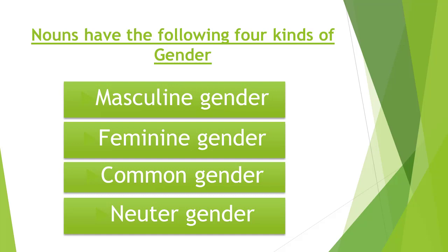First is masculine. Masculine represents men. If we are talking about a man, then that will be masculine gender. If we are talking about a female person, then that will be feminine gender.